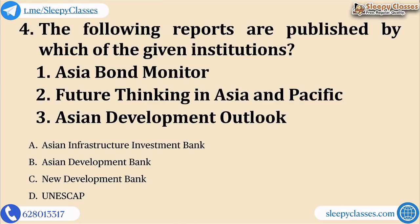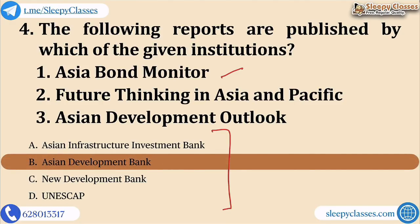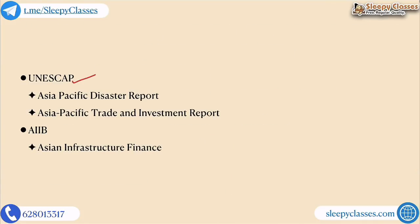The fourth question is about reports published. You have to identify which institution publishes the Asia Bond Monitor, Future Thinking in Asia Pacific, and Asian Development Outlook. The correct answer is the Asian Development Bank — ADB publishes all three reports. Additionally, UNESCAP (United Nations Economic and Social Commission for Asia and the Pacific) publishes the Asia Pacific Disaster Report and the Asia Pacific Trade and Investment Report. AIIB publishes the Asian Infrastructure Finance report.